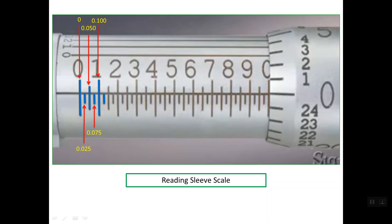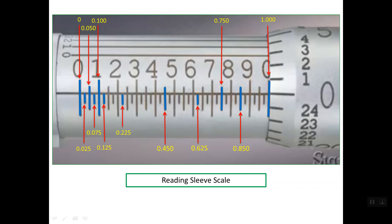Continuing along the sleeve scale: this line is 0.125 of an inch, this line is 0.225, this line is 0.450, this line is 0.625, this line is 0.750, this line is 0.850, and the last line is simply 1.000 of an inch. So this is the way to read the lines on the sleeve scale.